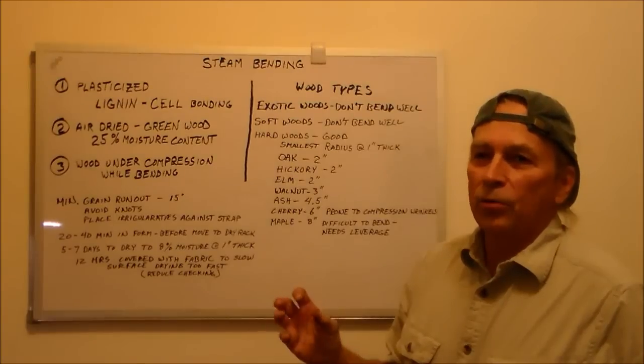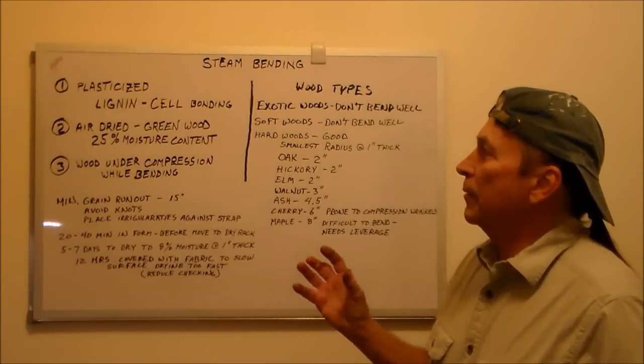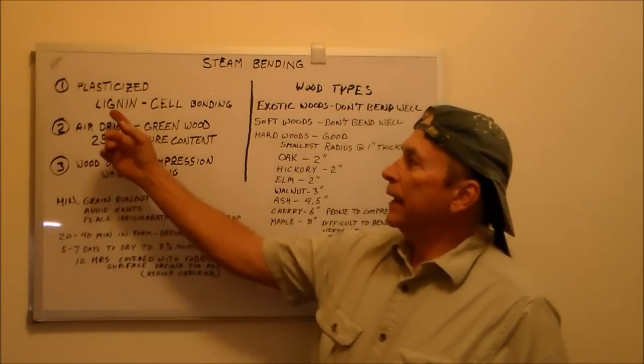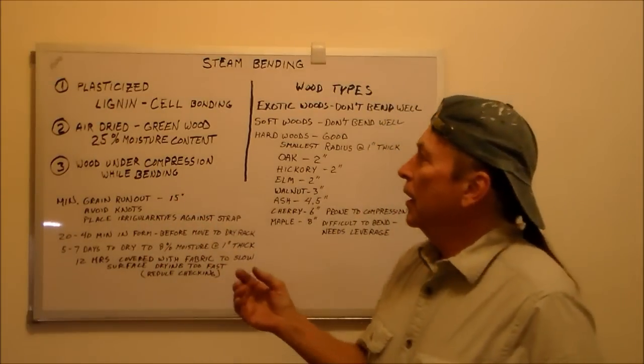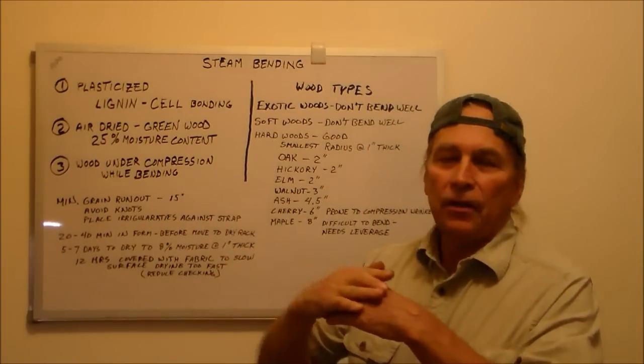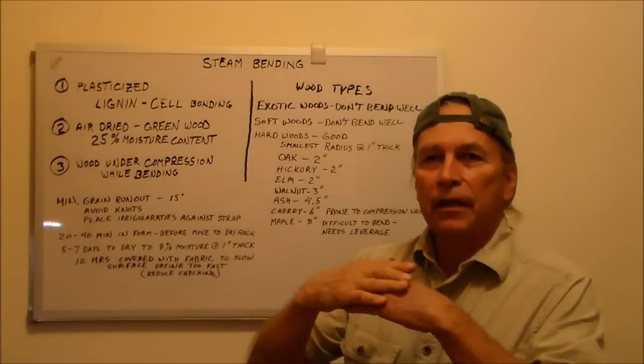Lignin is kind of like a glue that holds the wood cells together, bonds them together. You need to have this plasticized so that it can be moved, and that allows you to move the cells so they can cross or compress across each other.